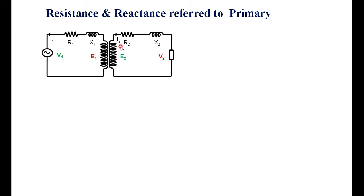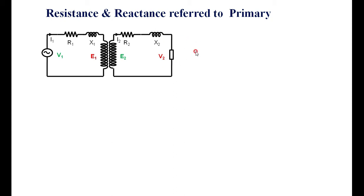We know the circuit model of a transformer having R1 and X1 in the primary, R2 and X2 in the secondary, with the two windings. The applied voltage is V1, and the induced voltages are E1 and E2, and the output voltage is V2.